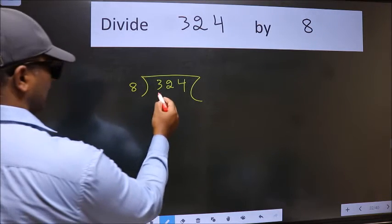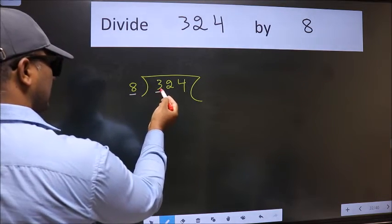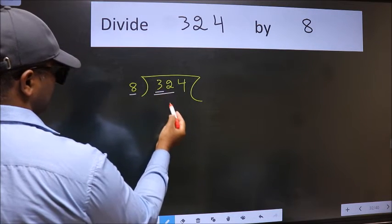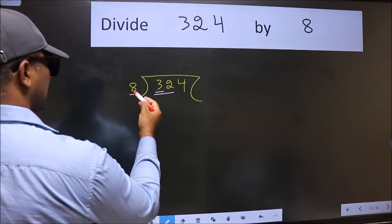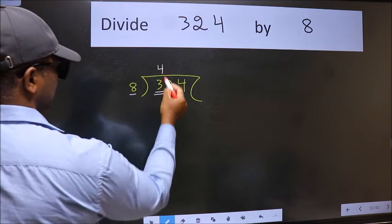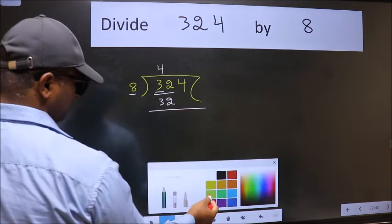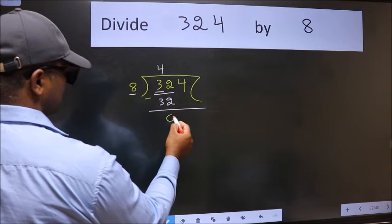Here we have 3, and here 8. 3 is smaller than 8, so take 2 numbers, 32. When do we get 32 in 8 table? 8 fours 32. Now we should subtract. We get 0.